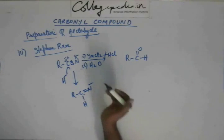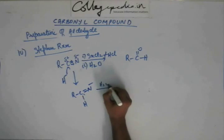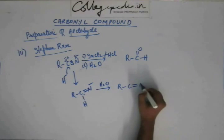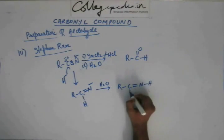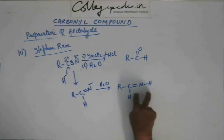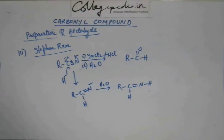Reaction stopped. Now in the second step, you add water. When you add water, the hydrogen from the water will be abstracted by nitrogen, and nitrogen will become neutral. So this is what you are going to have. When you proceed on with hydrolysis, there will be hydrolysis of this imine, and you are going to get an aldehyde.